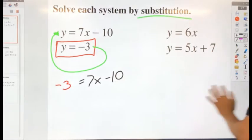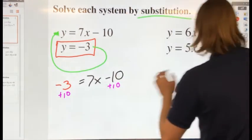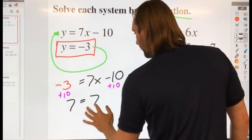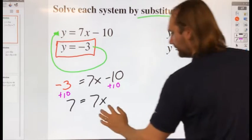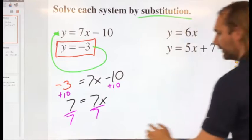So let me add 10 to both sides. That's going to give me 7 equals 7x. And lastly, divide by 7. I get that x equals 1.